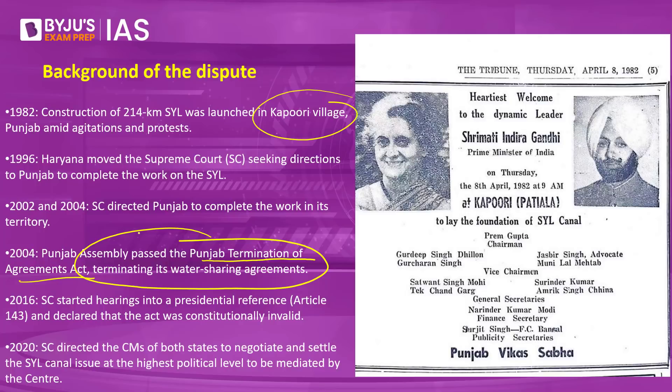This was a unilateral action, and Haryana was furious — arguing that a bilateral agreement cannot be revoked by one state alone. The next major milestone came in 2016, when the President of India sent a Presidential Reference to the Supreme Court under Article 143, which allows the President to seek legal advice from the Supreme Court (though it is not binding). The Supreme Court ruled that the law passed by the Punjab Assembly was unconstitutional and should not be allowed.